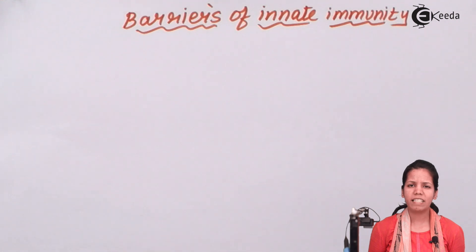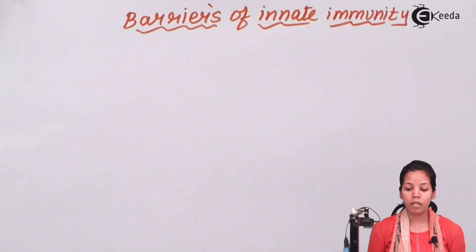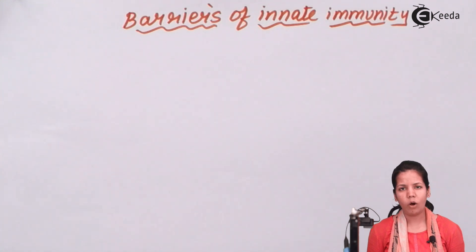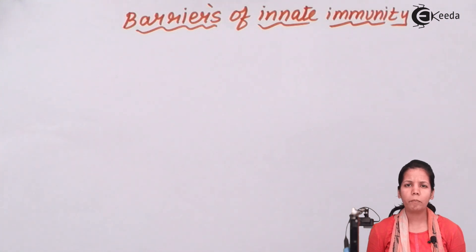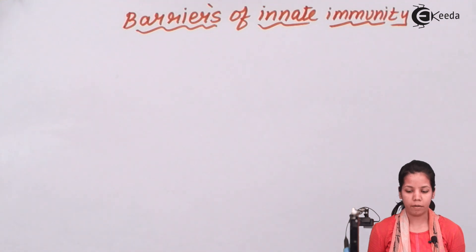Anatomical barriers: when I say anatomy, it means the upper surface of your body. The anatomical barriers would include your skin, or microscopic porous regions present on certain dermal regions of the skin.